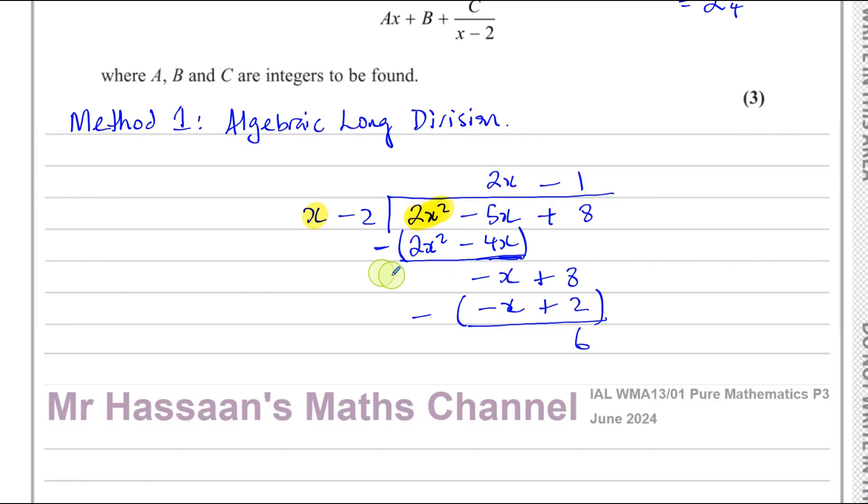If the remainder was 0, then this would be a factor of that. But in this case, no. There's a remainder, so it's not a factor of that. That's why we end up with this remainder at the end.